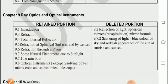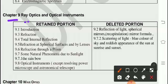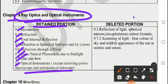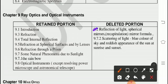Chapter ninth chapter, Ray Optics, Optical Instruments. Retained one is Introduction, Third Refraction, Fourth one, Total Internal Reflection, Fifth point, Sixth point, Seventh point, and Eighth one, Optical Instruments. The deleted ones, Second point deleted. Second point, reflection of Light, Spherical Mirrors, Mirror Formula, and 7.2, in seventh, 7.2, Scattering of Lights, blue color of sky and reddish appearance of the sun at sunrise and sunset, this is deleted.